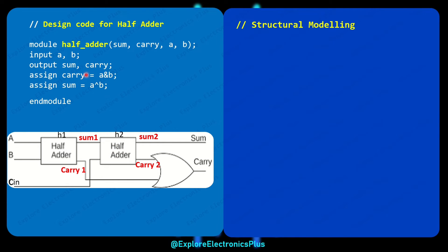This approach requires a half adder design first. The half adder design is written using dataflow description: carry = A AND B, and sum = A XOR B. Using this half adder module in structural modeling style, we can write the code for the full adder.